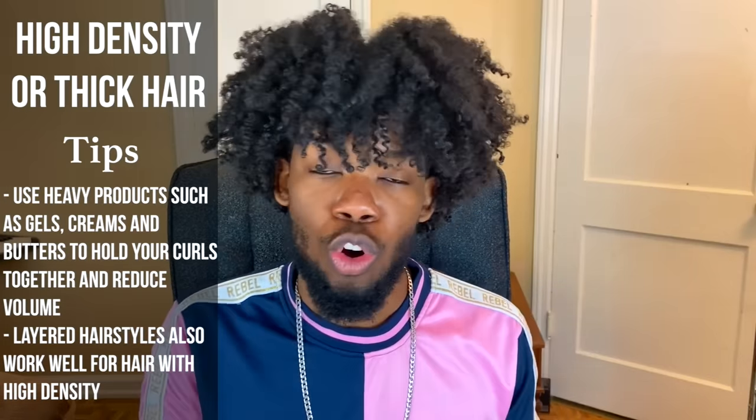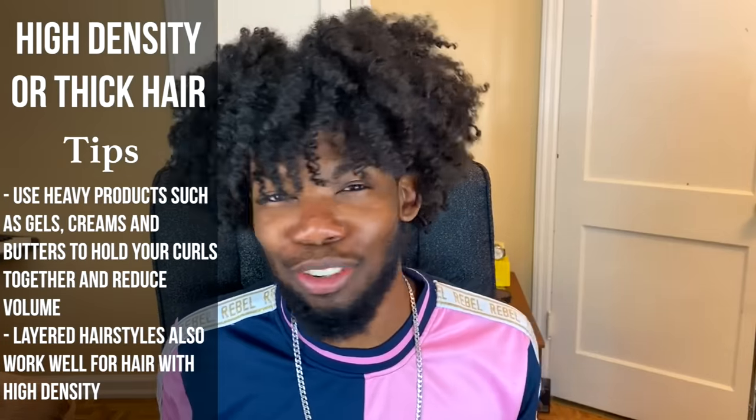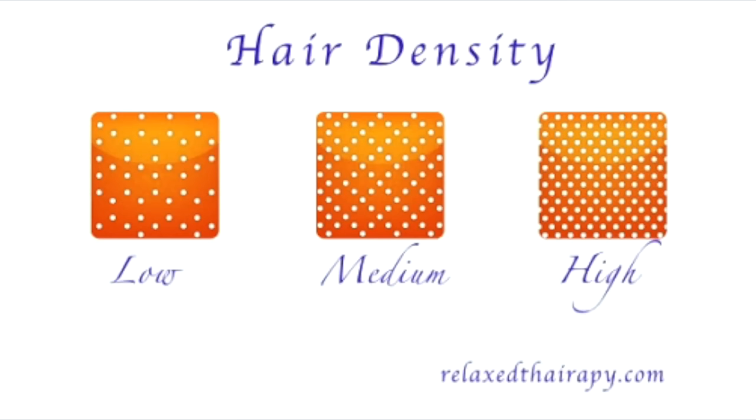With high density hair, it's good to apply more product since your hair is full and thick. You can use heavier products such as butters, creams, and gels to clump your curls together and reduce frizz, or you can embrace your volume with full-body styles. To find your hair density, look at your dry natural hair without manipulating it — if you can clearly see your scalp it's low density, some scalp visible is medium, and scalp difficult or impossible to see is high density.